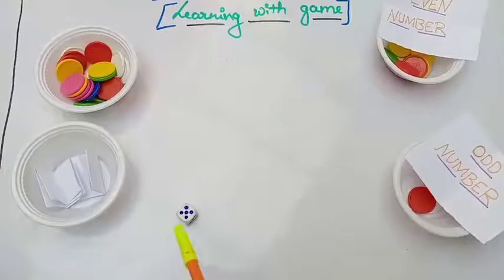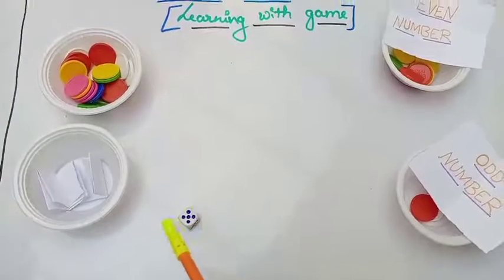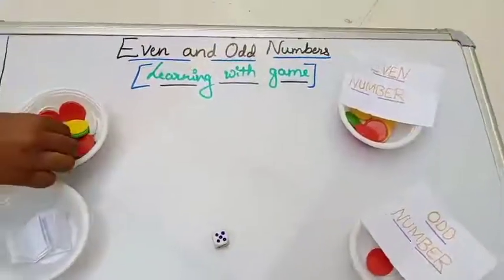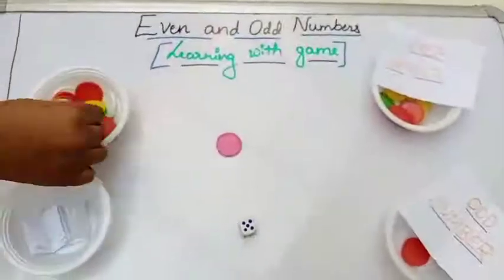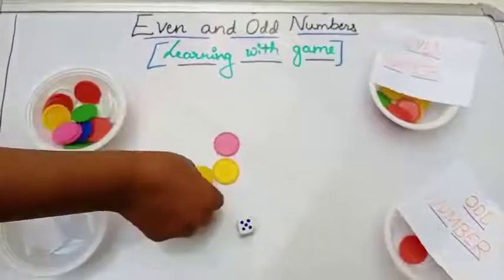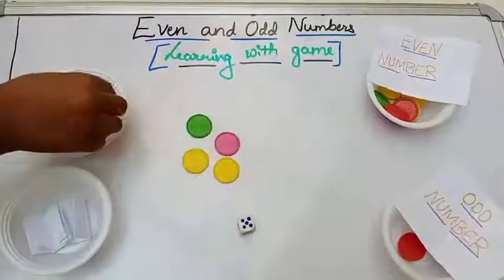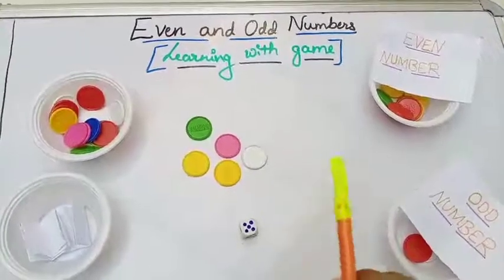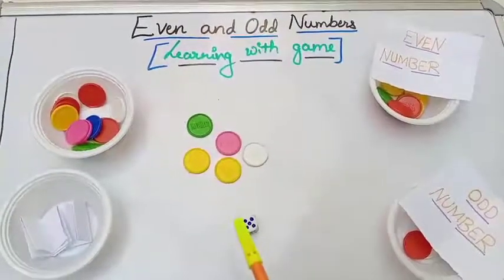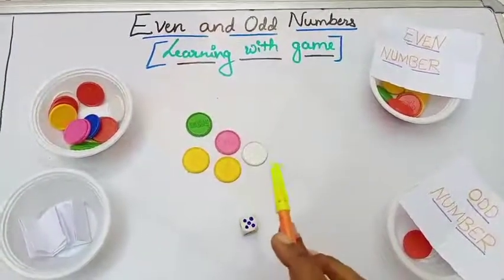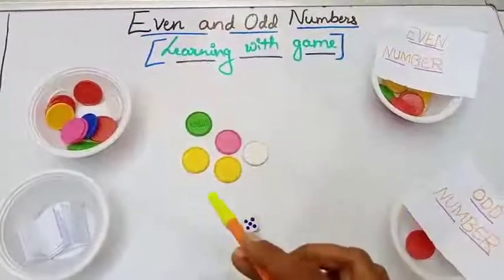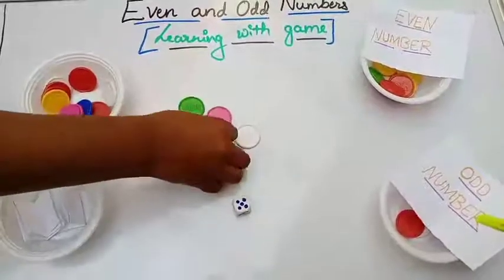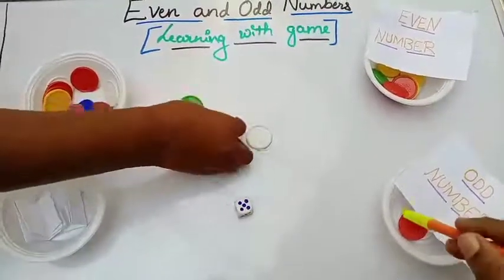Next — how much did you get now? One, two, three, four, five — you rolled five. Take five coins from the bowl: one, two, three, four, and five. Now tell me, is five an even number or odd number? Five is an odd number. That means these five coins will go to the odd number bowl — put them in the odd number bowl.